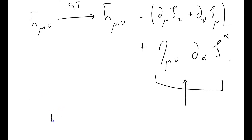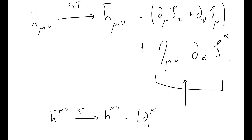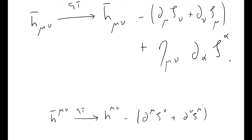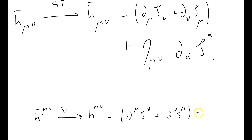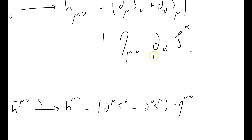First of all, I'm going to raise these indices μν, just lifting them up under a gauge transformation: h̄^μν minus — the sign doesn't change — ∂^μ ξ^ν plus ∂^ν ξ^μ plus η^μν upstairs times ∂_α ξ^α. But the clever thing is that this last term is a scalar, so it doesn't care where its indices are — they just stay where they are.